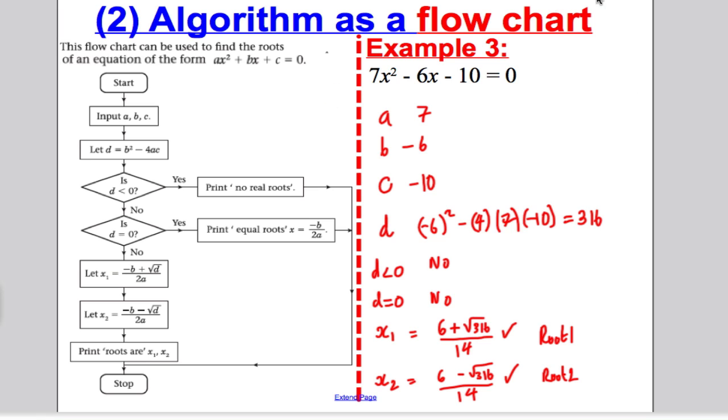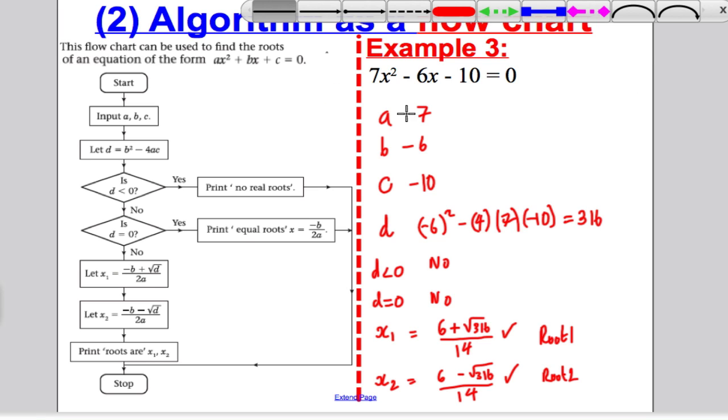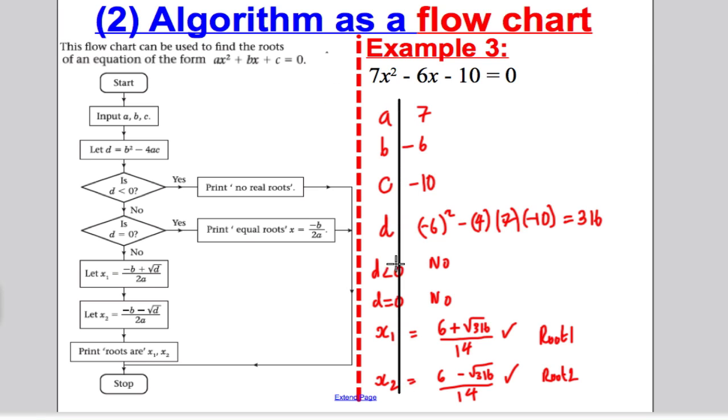Therefore, we've got what X1 and X2 should be. X1 is negative B plus the square root of D over 2A, so it's equal to 6 plus the square root of 316 all over 14. And X2 would be 6 minus the square root of 316 over 14. And at that point, we'd stop and we'd print the root. So that is root 1 and that is root 2. And it's as simple as that.